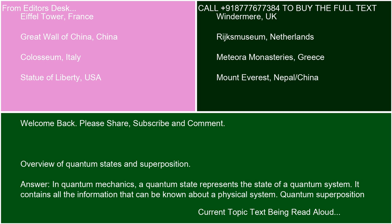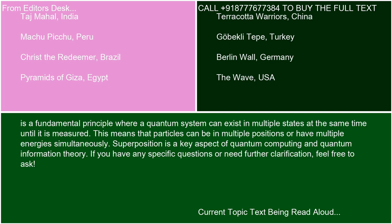In quantum mechanics, a quantum state represents the state of a quantum system. It contains all the information that can be known about a physical system. Quantum superposition is a fundamental principle where a quantum system can exist in multiple states at the same time until it is measured.